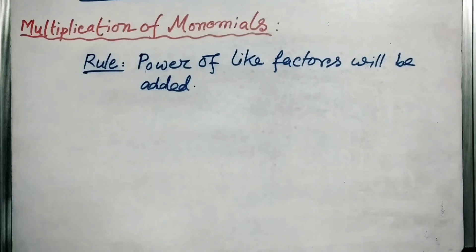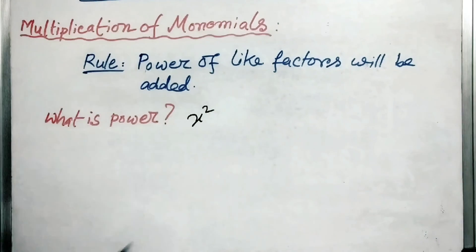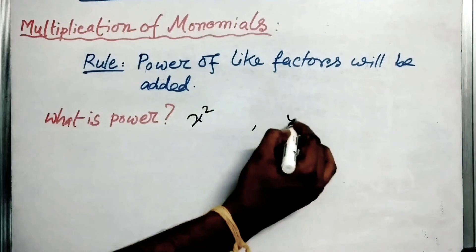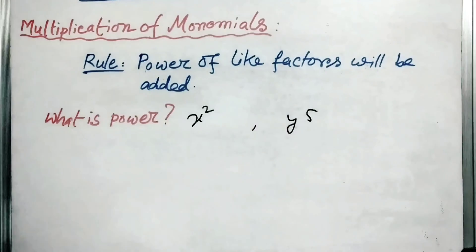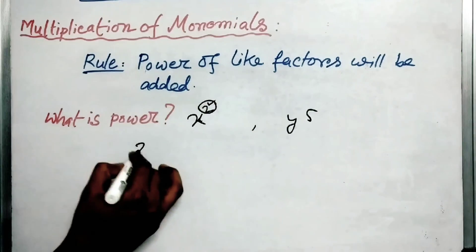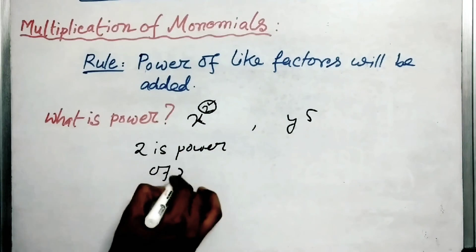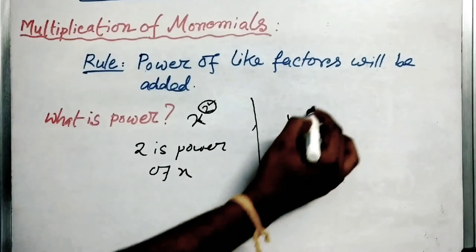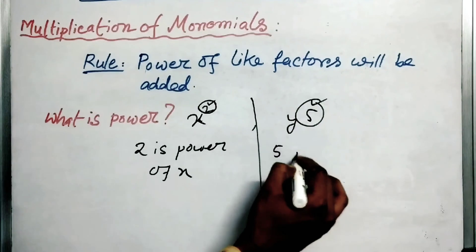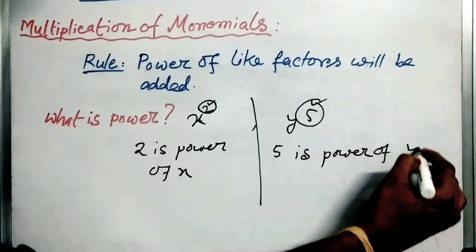The rule is: powers of like factors will be added. Now the question is, what is power? Suppose x squared, y to the power 5. Here this 2 is the power of x, and this 5 is the power of y.